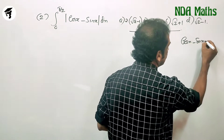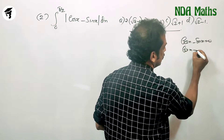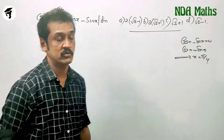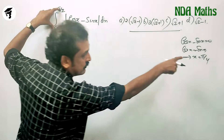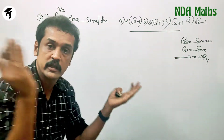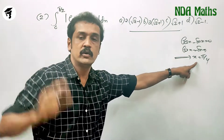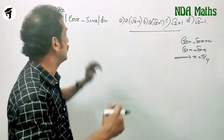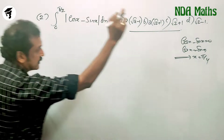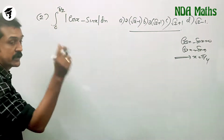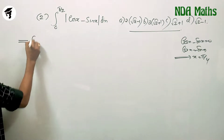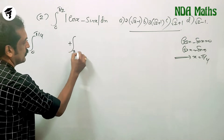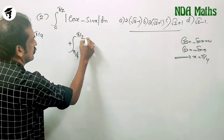cos x minus sin x equals 0 gives cos x equals sin x, which implies x equals π/4, lying in the interval 0 to π/2. We have to split the integral at π/4, so we split it as 0 to π/4 plus π/4 to π/2.